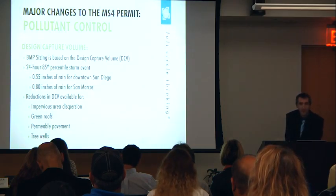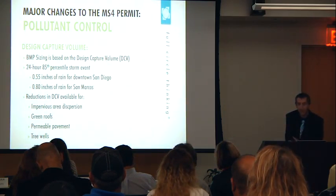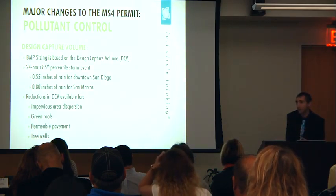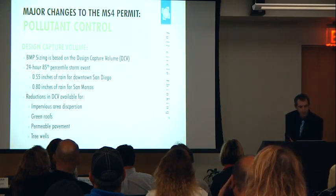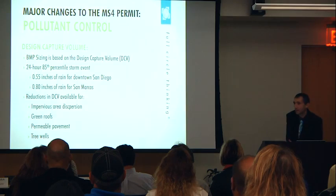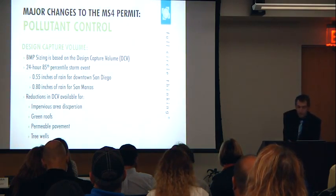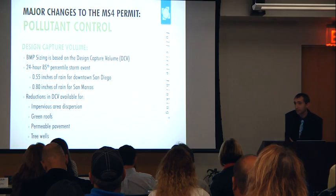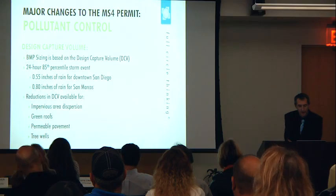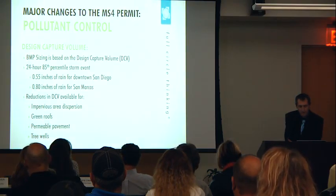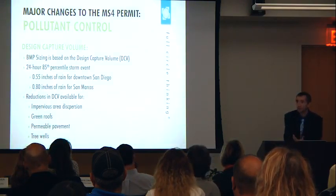The 85th percentile means that 85% of all storms are that size or smaller, so if you capture the Design Capture Volume you're theoretically capturing 85% of all storm events in the region. To give an idea of the volumes involved, the 85th percentile storm event in downtown San Diego is a little over half an inch of rain. It varies throughout the county — generally increasing closer to the mountains and farther north. In San Marcos, for example, it's about 0.8 inches — a fairly sizable volume of water.